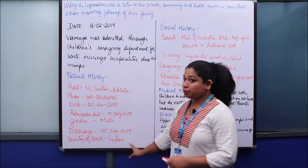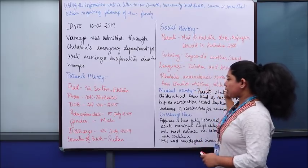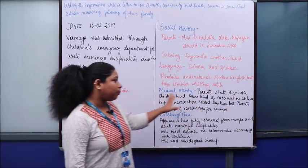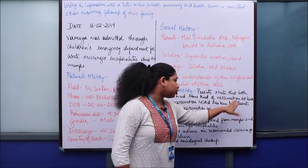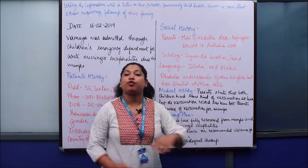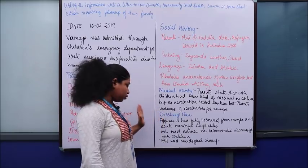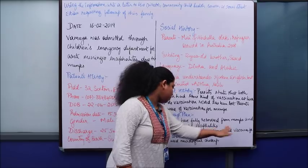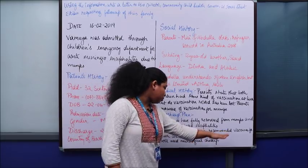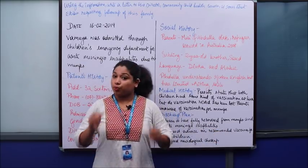Looking at the patient history, we have the gender, discharge date, and country of birth — born in Sweden. In the social history, they discuss the sibling and language. In the medical history, it states that the parents say both children had some kind of vaccination at birth, but the vaccination record has been lost and the parents are unaware of the vaccination for mumps. The discharge plan states: appears to have fully recovered from mumps and acute meningoencephalitis; will need advice on recommended vaccines for both children; and will need a neurological checkup.